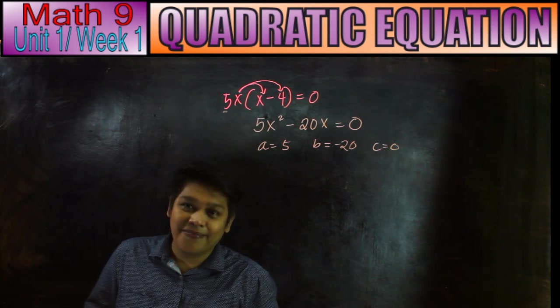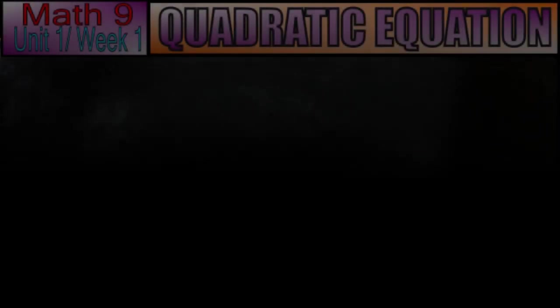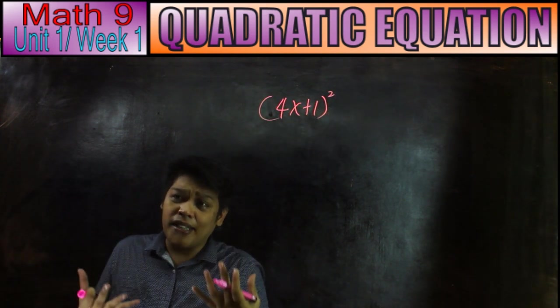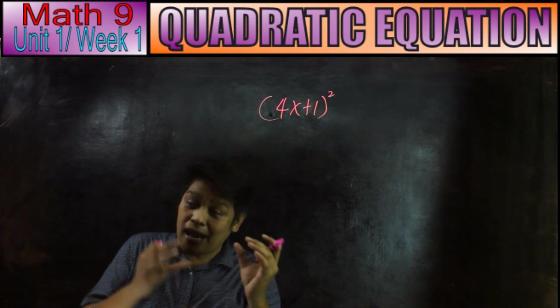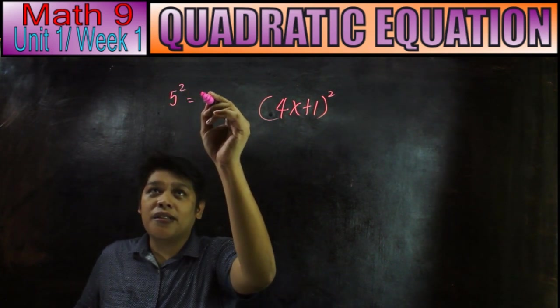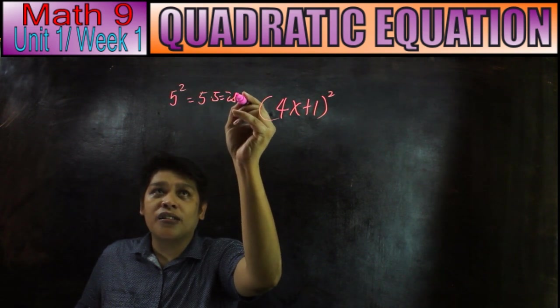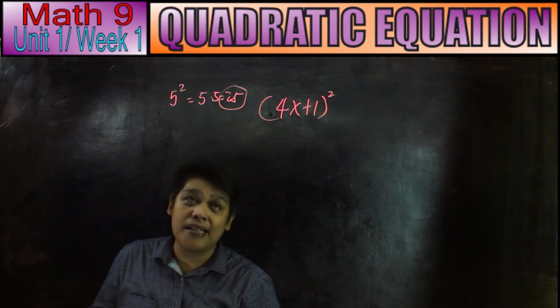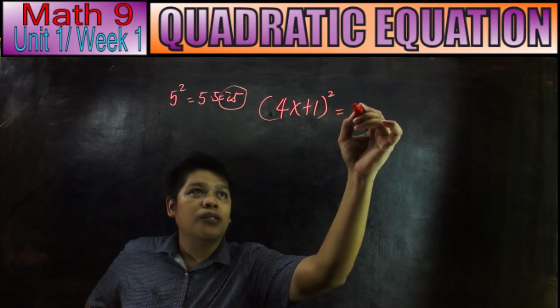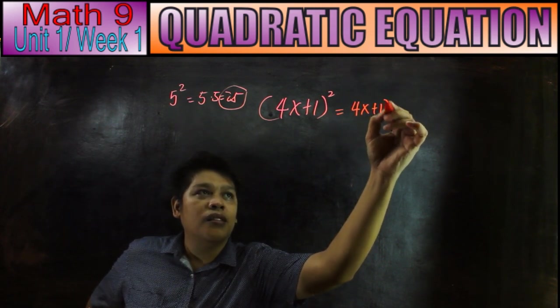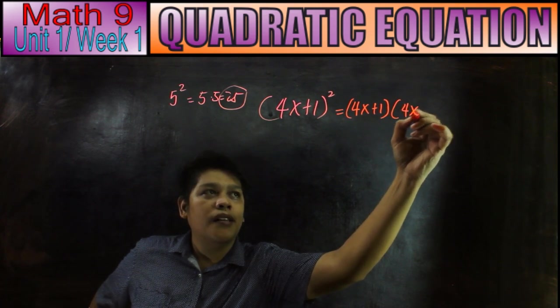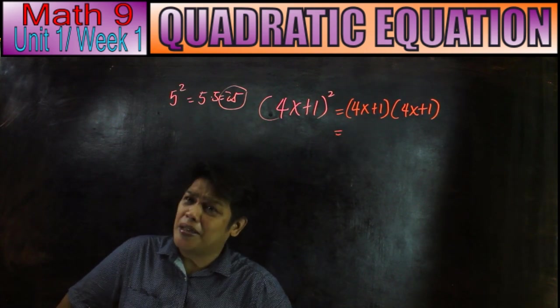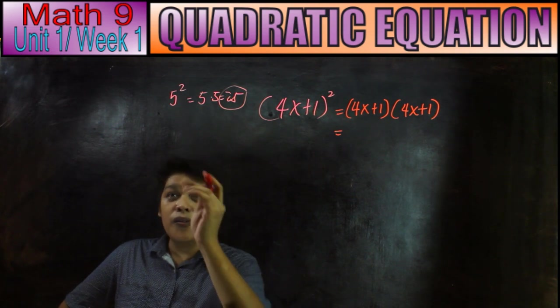We have here 4x plus 1 squared. Ibig sabihin ng squared ay imultiply yung sarili sa kanya. So 4x plus 1 squared, you multiply it to itself: 4x plus 1 times 4x plus 1.